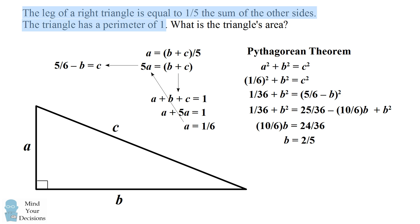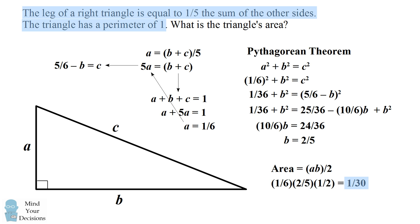We've now solved for the two legs of this right triangle and can calculate the area as the product of the legs divided by two. This gives us the answer of 1 divided by 30. So that's one way to solve the problem.